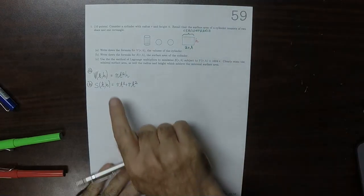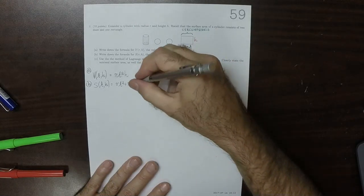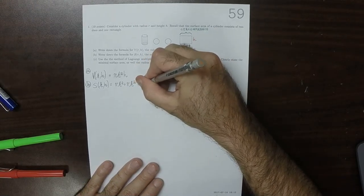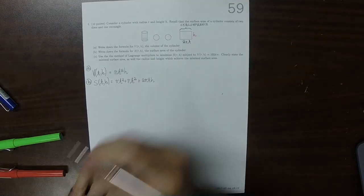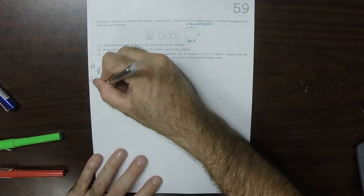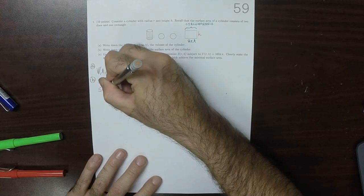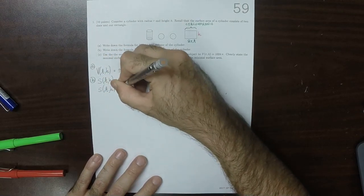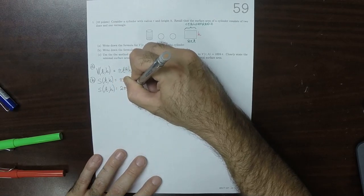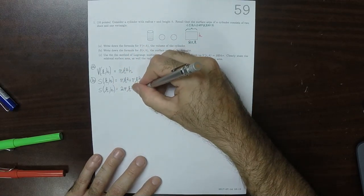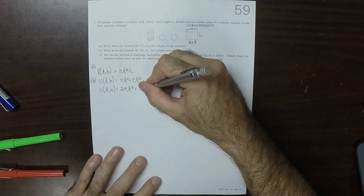So that's one disk plus one disk plus 2 pi r h. So simplified, that would be 2 pi r squared plus 2 pi r h.